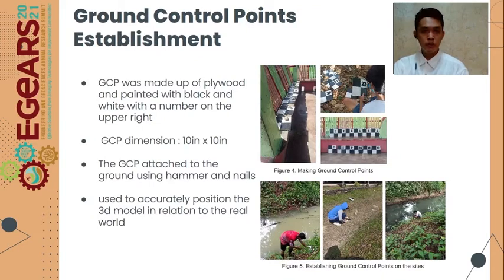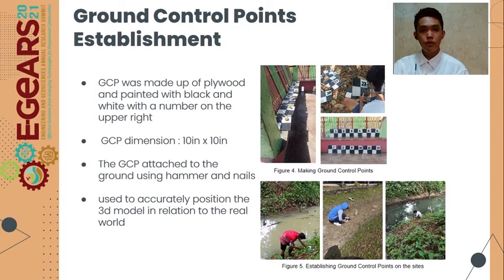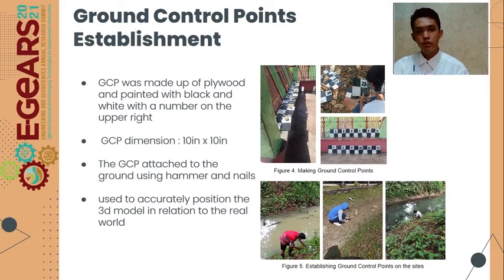For ground control point establishment, the ground control points were made out of plywood and painted black and white with a number on the upper right to be easily identified in the images. The GCP dimension was 10 inches by 10 inches and attached to the site using hammer and nails. The purpose of the ground control points was to accurately position the 3D model in relation to the real world and to determine the accuracy of the 3D model.